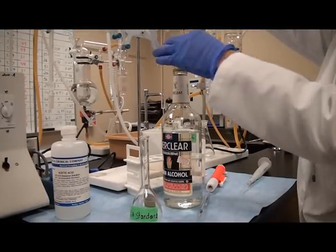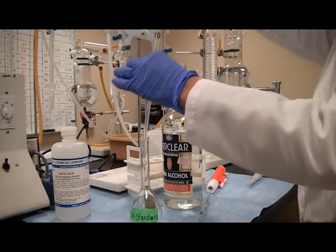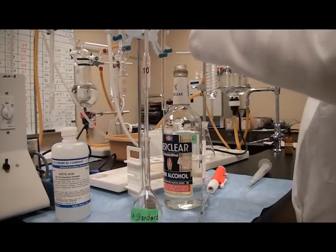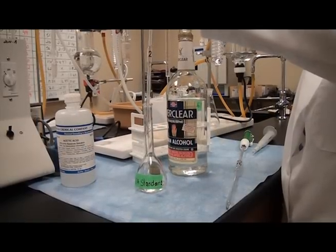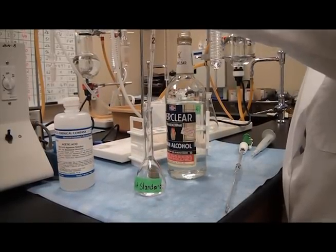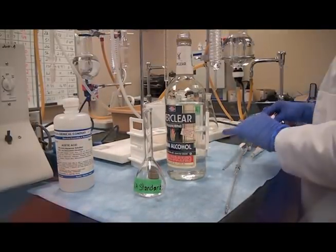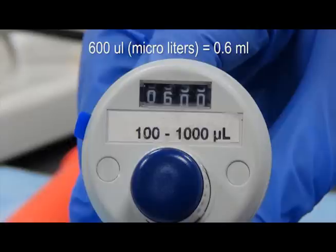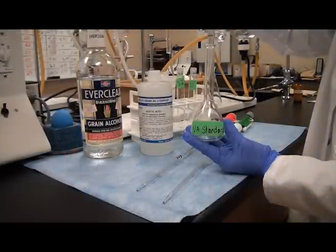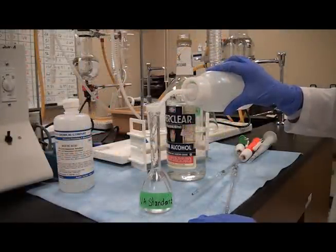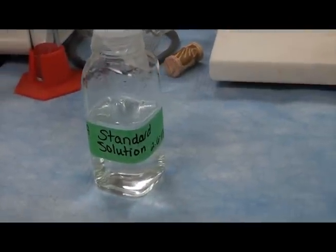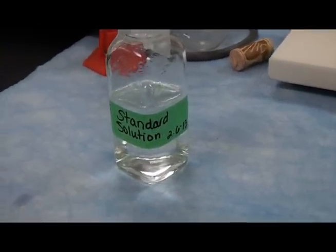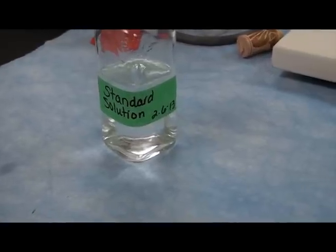First, we'll need to create a 0.06% acetic acid solution to standardize our measurement. Use a 100 ml volumetric flask and add 12 ml of grain alcohol, along with 0.6 ml of 10% acetic acid. Bring the flask to volume with DI water. Place the acetic acid solution into a labeled and dated reagent container. The solution may be stored in the refrigerator for up to one week.